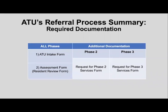This table summarizes the required documentation. For all phases — phase one, phase two, and phase three — we need two core documents: the assistive technology unit intake form and the assessment form previously known as the resident review form. If the class member can benefit from an environmental modification assessment, submit the request for phase two services form. If the client can benefit from phase three services, use the request for phase three services form. For all phases, the two core documents are always required.